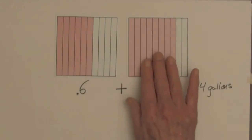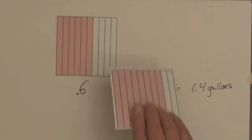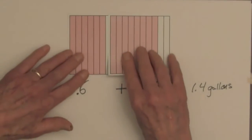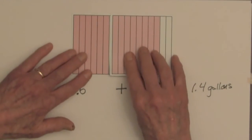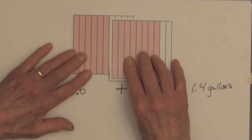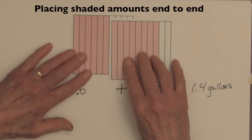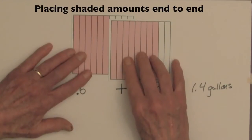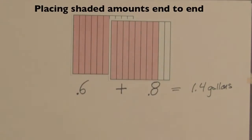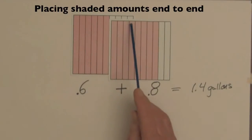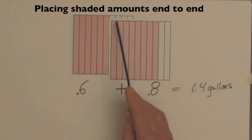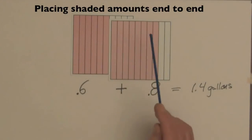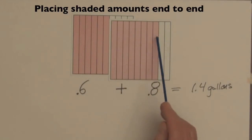The total shaded amount can also be represented by placing the two shaded amounts end to end. And now you can see the four parts filling out this first square. We have one whole square and four parts out of ten.